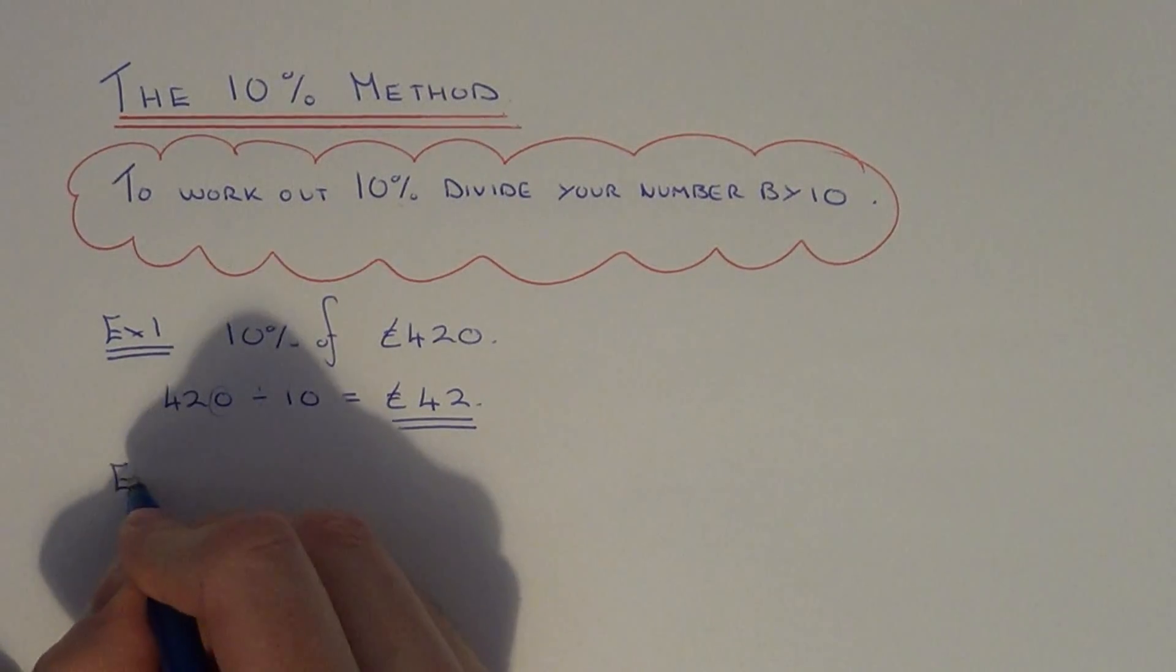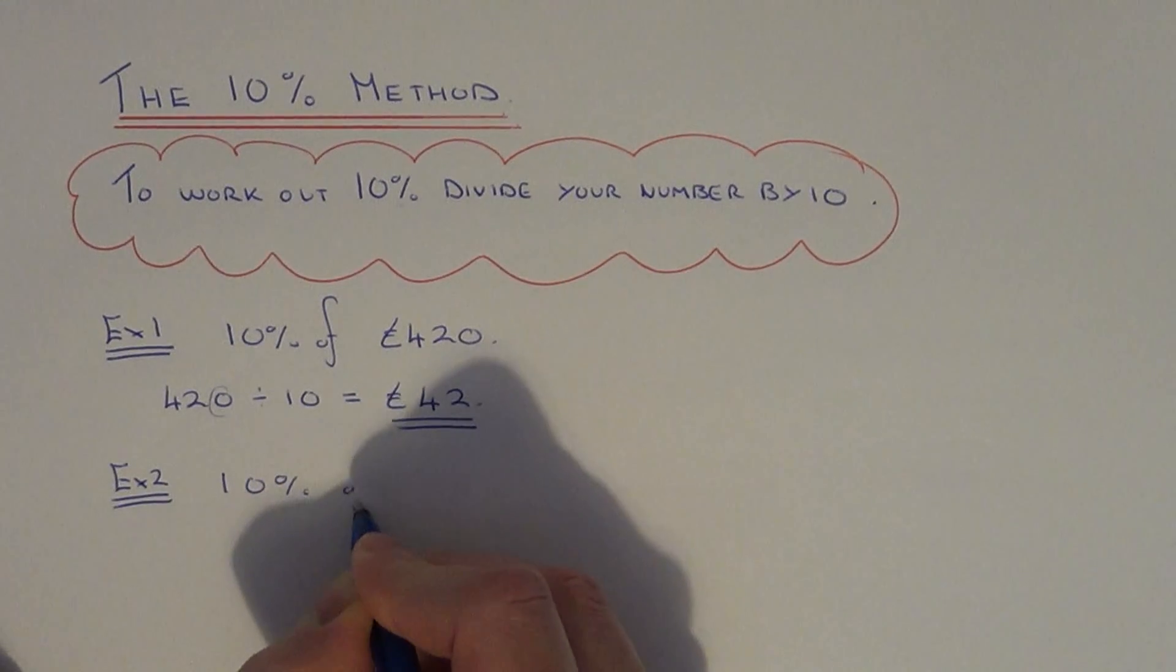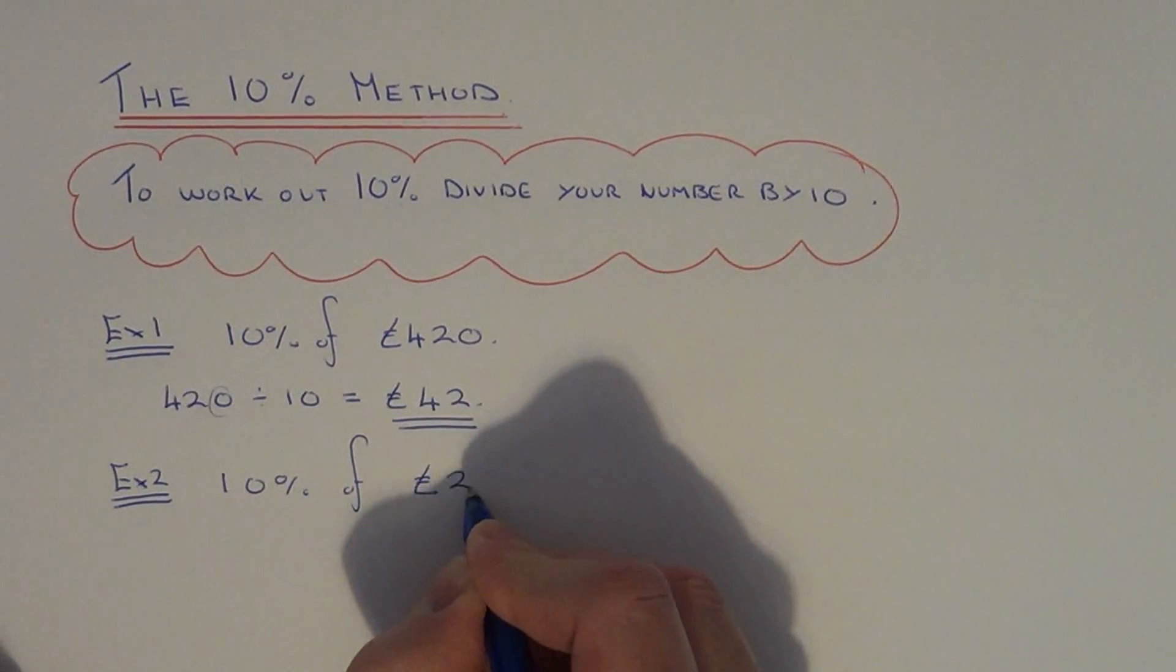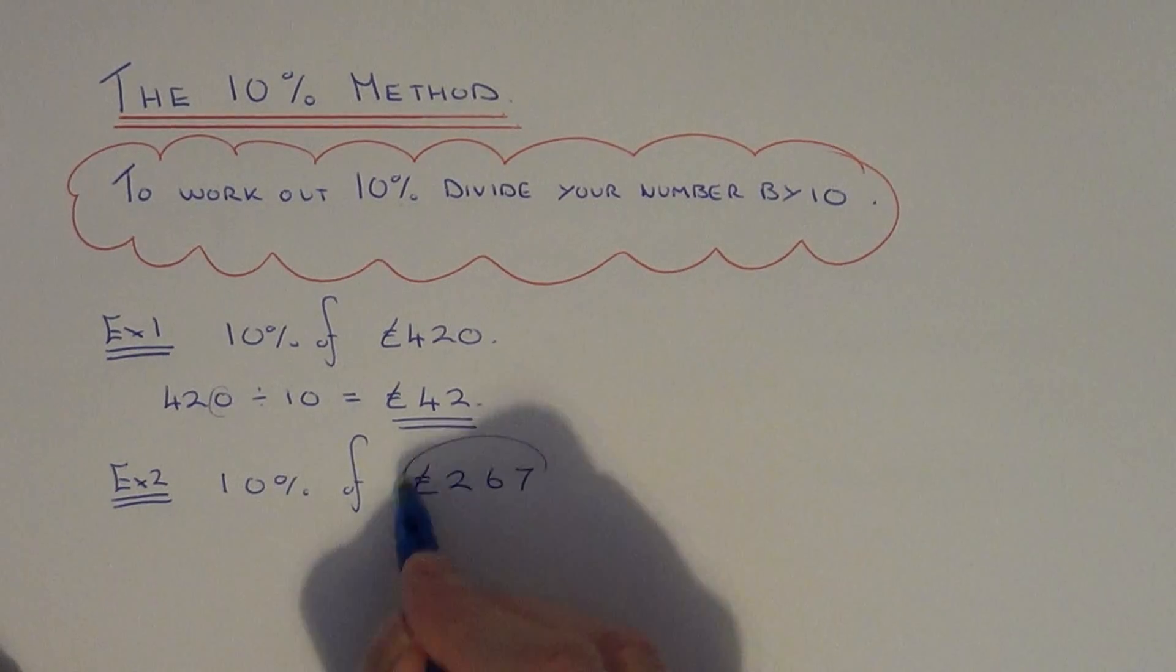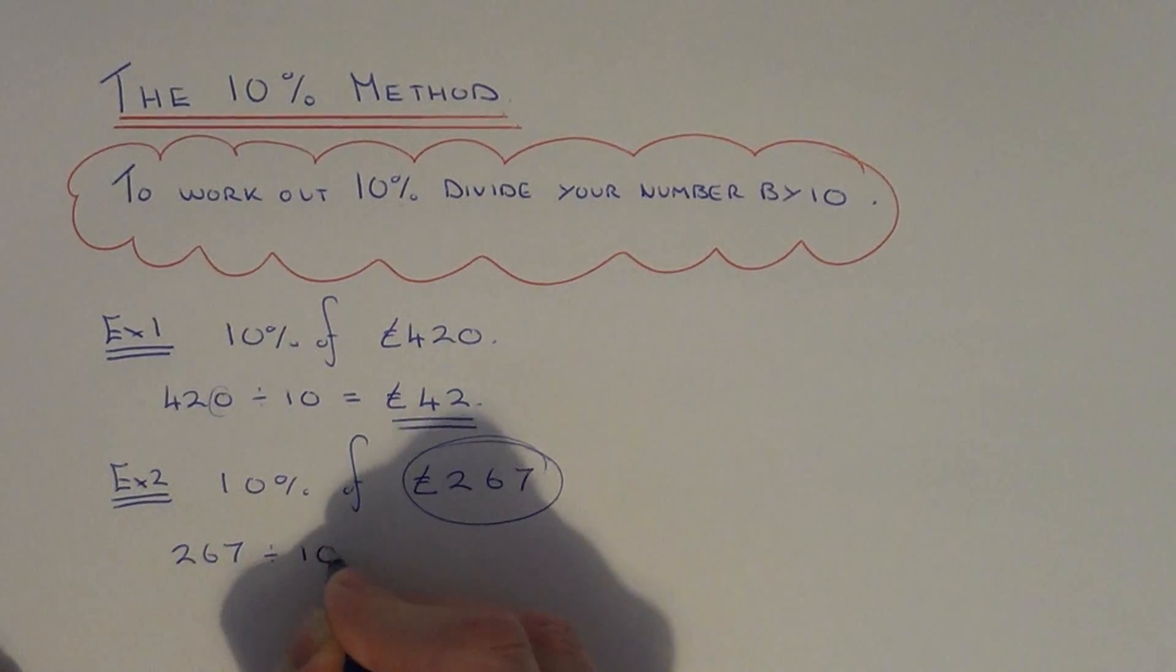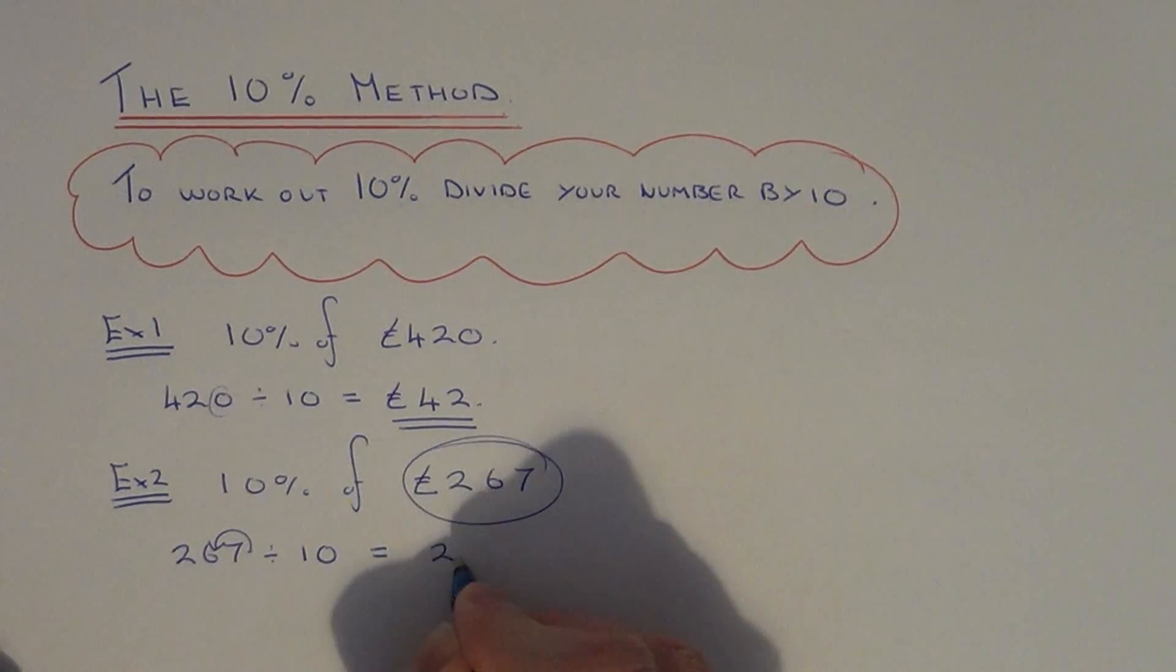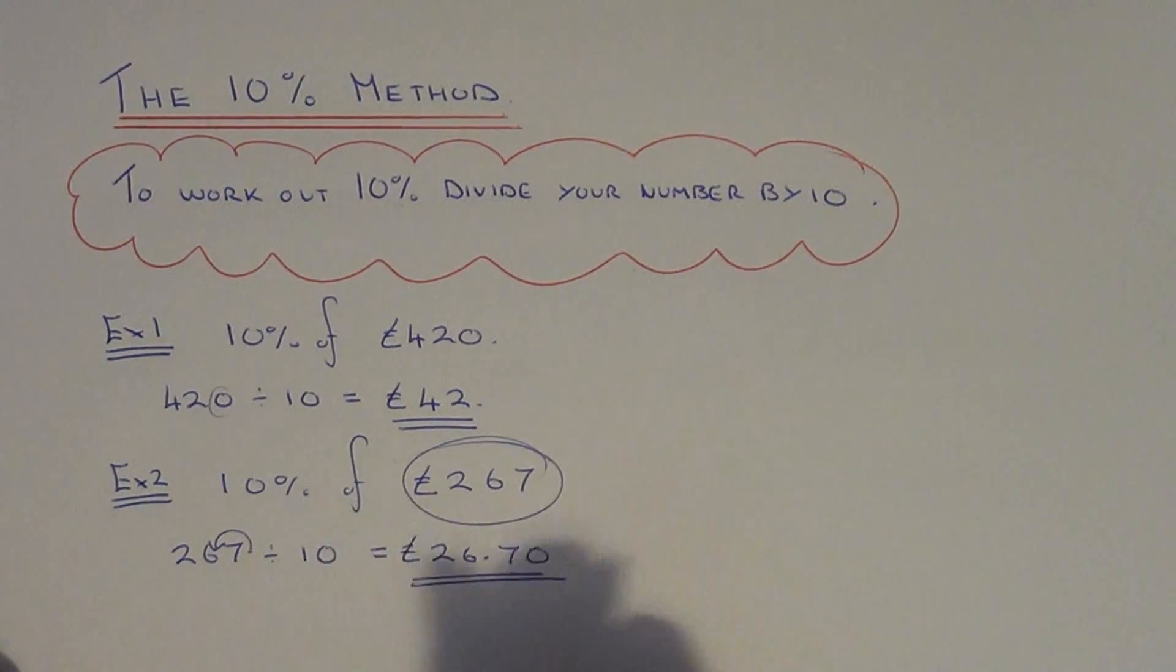So let's do another example. Example two, this time let's do 10% of £267. So again to get 10% we just need to divide the number by 10. So we do 267 divided by 10. Just hop the decimal point in a place and you get 26.7 which is the same as £26.70.